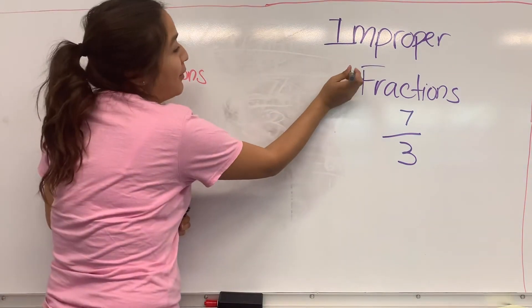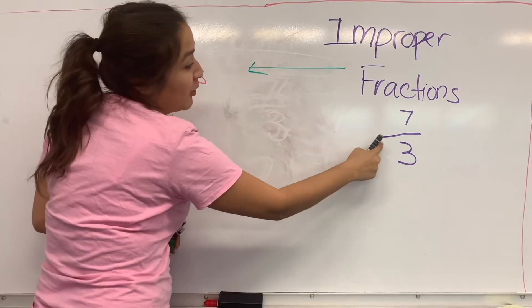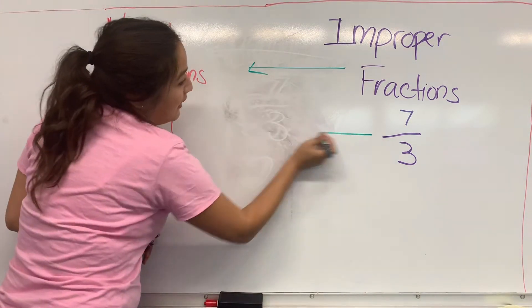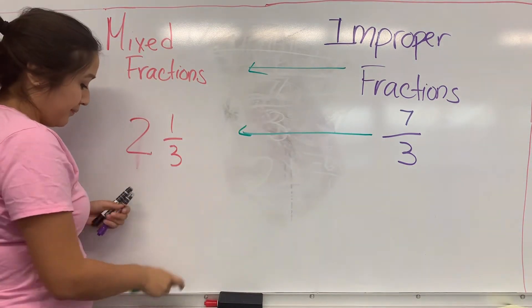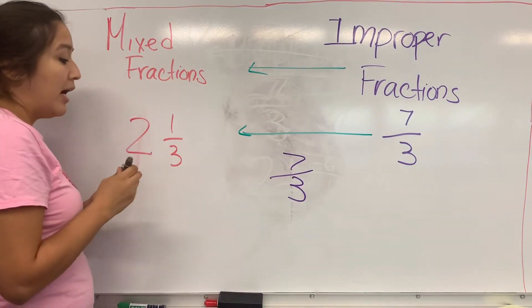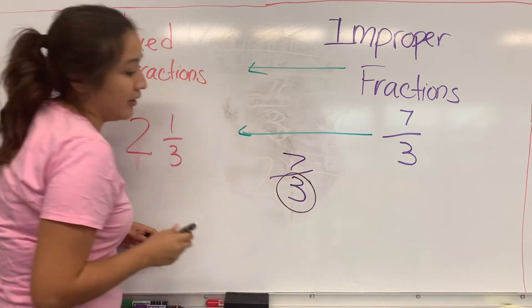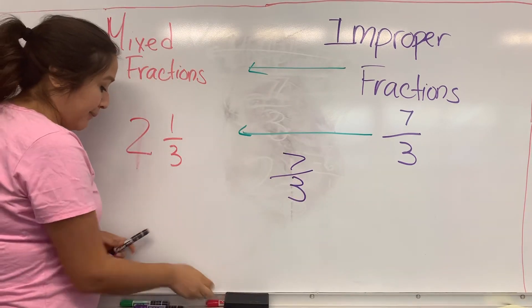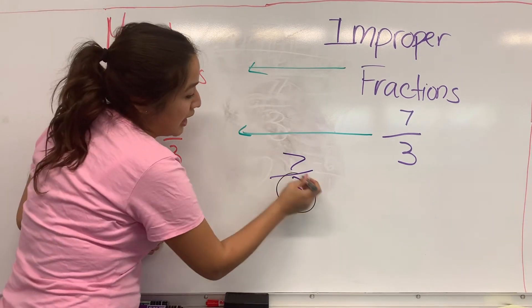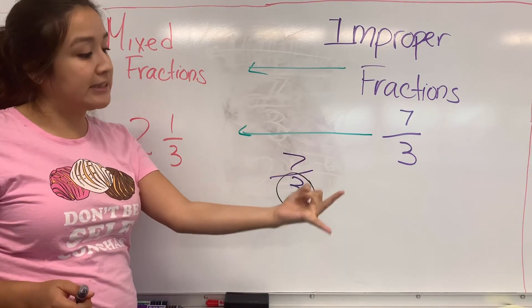Going from improper to mixed, all you got to do is skip count by my denominator. So I'm skip counting by 3: 3, 6, and then I can't go up to 9 because I only had 7. So you stop at 6.